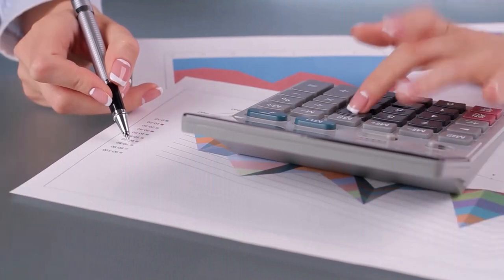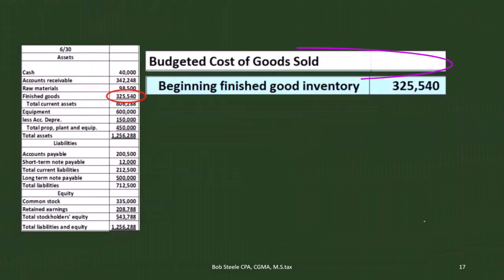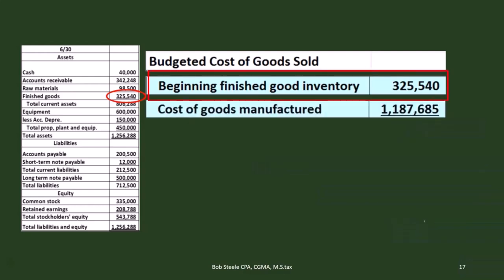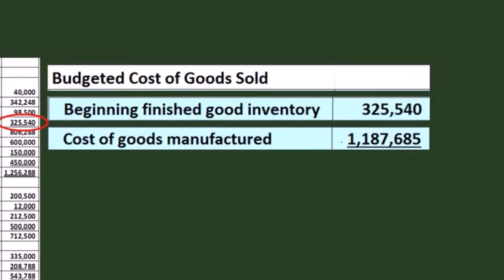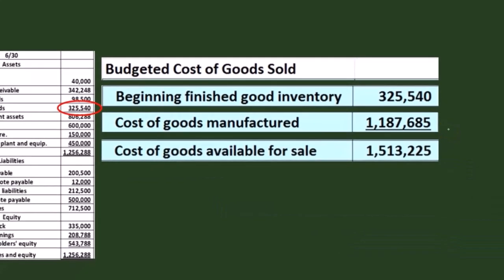The whole point is to use the cost of goods manufactured number in the cost of goods sold calculation, which is needed on the budgeted income statement. The cost of goods sold formula — familiar from inventory-type and merchandising companies — still starts with beginning finished goods inventory, but instead of purchases we use cost of goods manufactured, because in this case we are manufacturing the goods. That full manufacturing calculation replaces where purchases would normally go for a merchandising company.